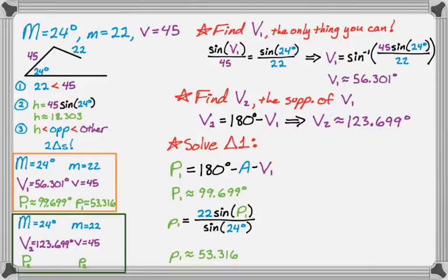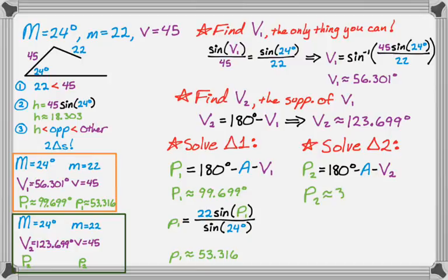Now look at the second set of information. Solve that triangle. So you solve them as if the other triangle doesn't even exist. You just kind of go through it. So angles add up to 180. So P2 is 180 minus A minus V2. Because the triangle with V1 and P1, that doesn't even matter to us anymore. We don't care about it.